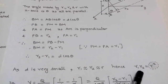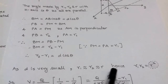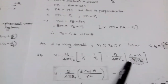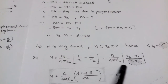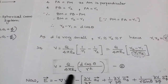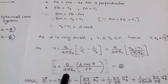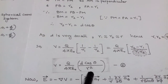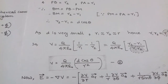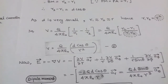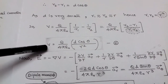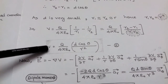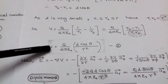Substituting r₁·r₂ = r² into equation 1, we obtain equation 2: V = q/(4πε₀) × (d·cosθ / r²). This is the electric potential at point P due to the electric dipole.